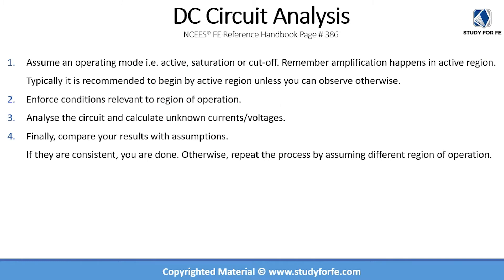The next step is DC circuit analysis. We will evaluate the state of a BJT circuit. Similar to diode circuit analysis, where we assumed an operating mode and verified it, the same process applies here. With one transistor, it can be in three different modes of operation. Step one is always to assume an operating mode — active, saturation, or cutoff. It is typically recommended to begin by assuming the active region.